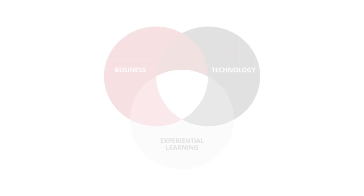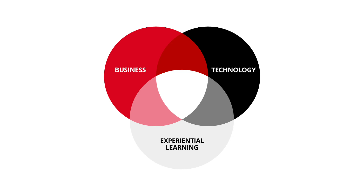But when you overlap them, that's where we bring business into the technology. Here's why you would program this way to solve business problems. Here's why data should be organized this way so a business has access to it to get the right information at the right time. And then you throw in the experiential component — add another circle — and you now have the intersection of all three circles, which is where IS is.